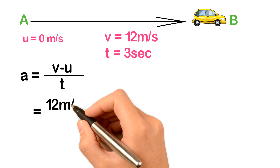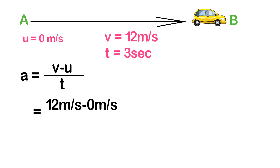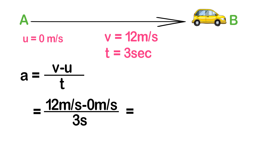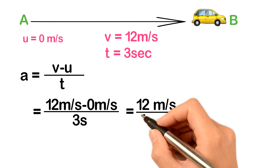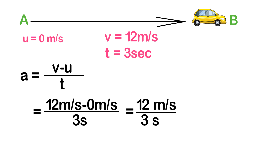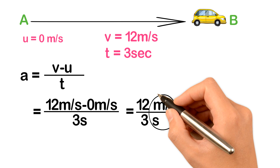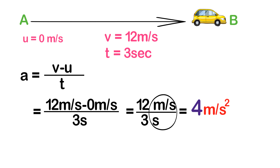Putting in the values: 12 meters per second minus 0 meters per second, divided by 3 seconds. This gives us 12 meters per second divided by 3 seconds, which equals 4 meters per second squared. Remember that the SI unit of acceleration is meters per second squared. So this was all about acceleration.